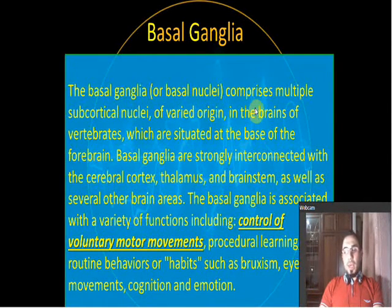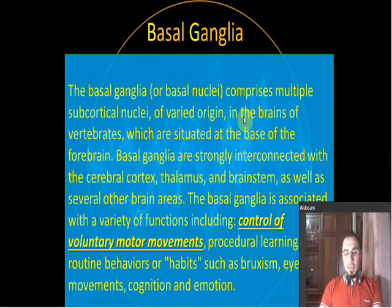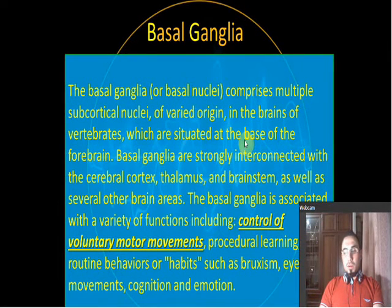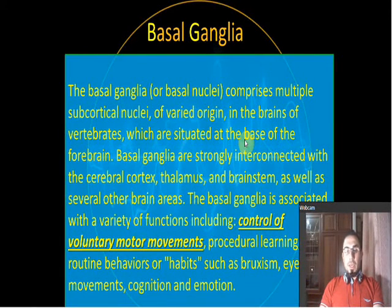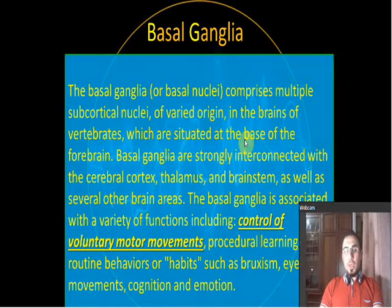The basal ganglia are nuclei located in the brain near the third and lateral ventricles and near the thalamus. They are responsible for controlling voluntary motor movement — specifically the initiation of movement, how movement stops, and coordinating muscle movement. They are also related to learning abilities.